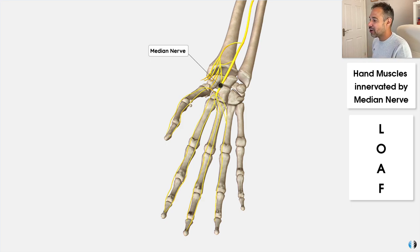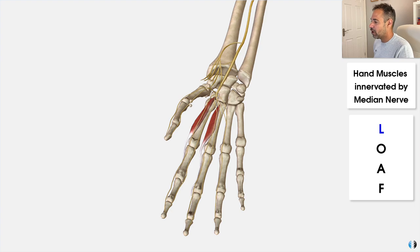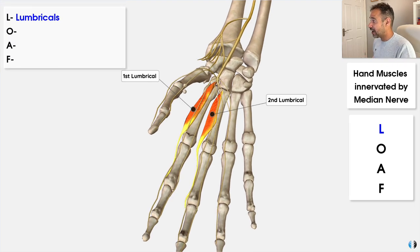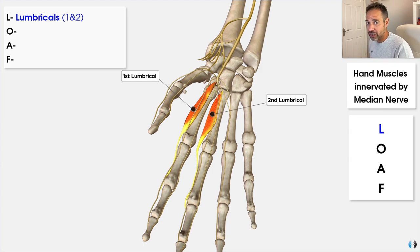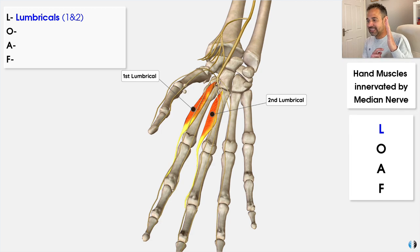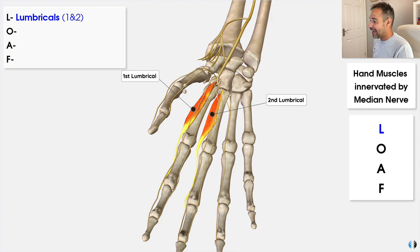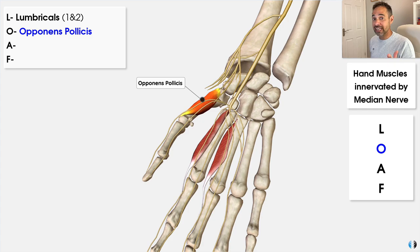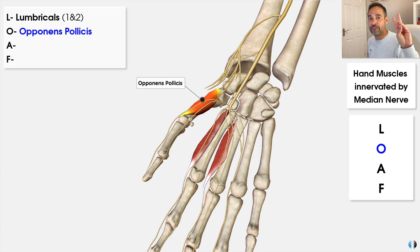Let's go through this. L stands for the lumbricals — in particular, the first and second lumbricals, because the third and fourth ones are supplied by the ulnar nerve. The lumbricals are responsible for flexion at the metacarpophalangeal joints and extension at the interphalangeal joints of the fingers. Then we have O, which stands for opponens pollicis. Pollicis relates to the thumb, and this muscle has a responsibility in opposition of the thumb.